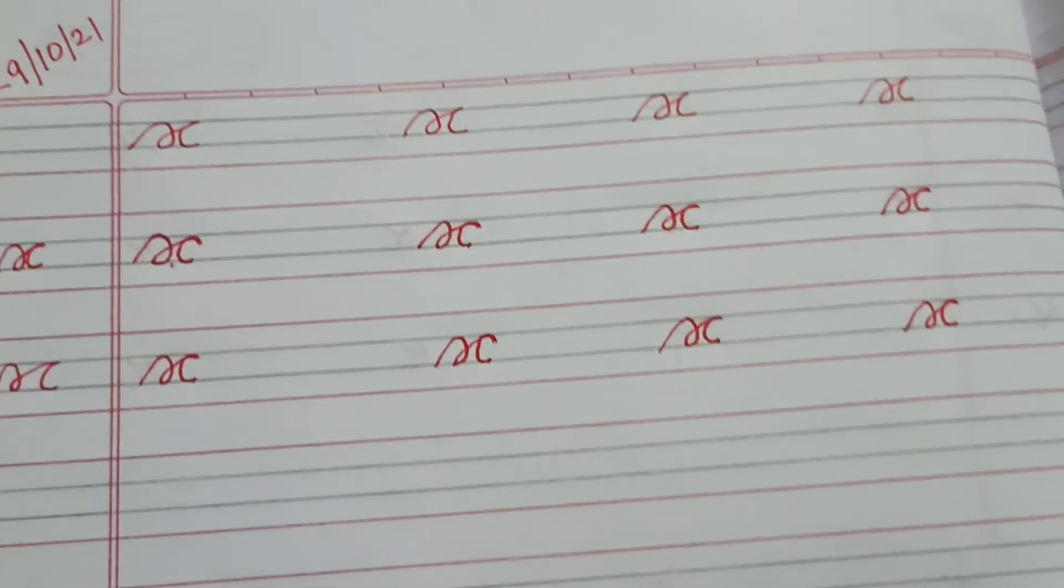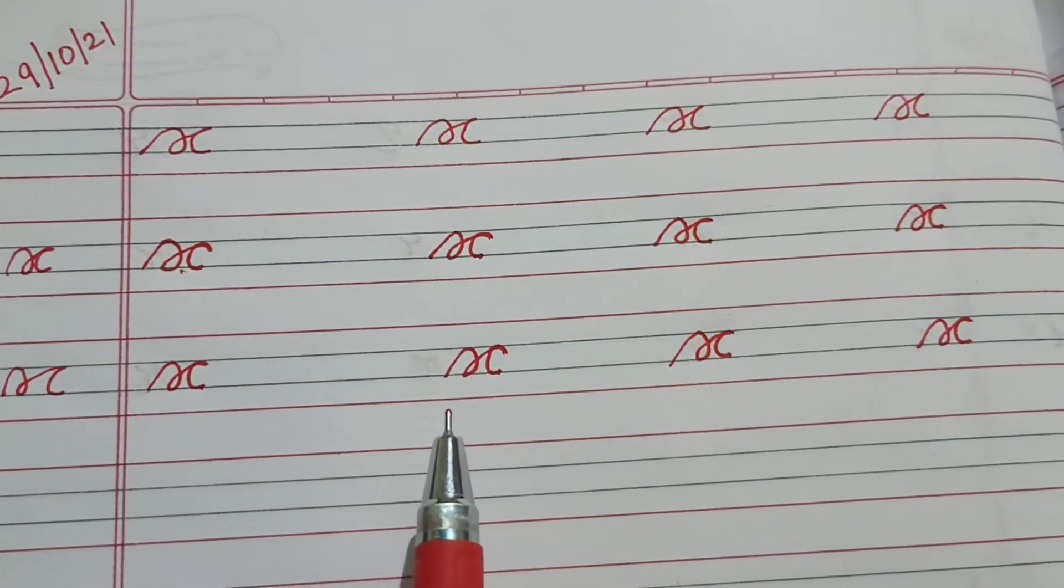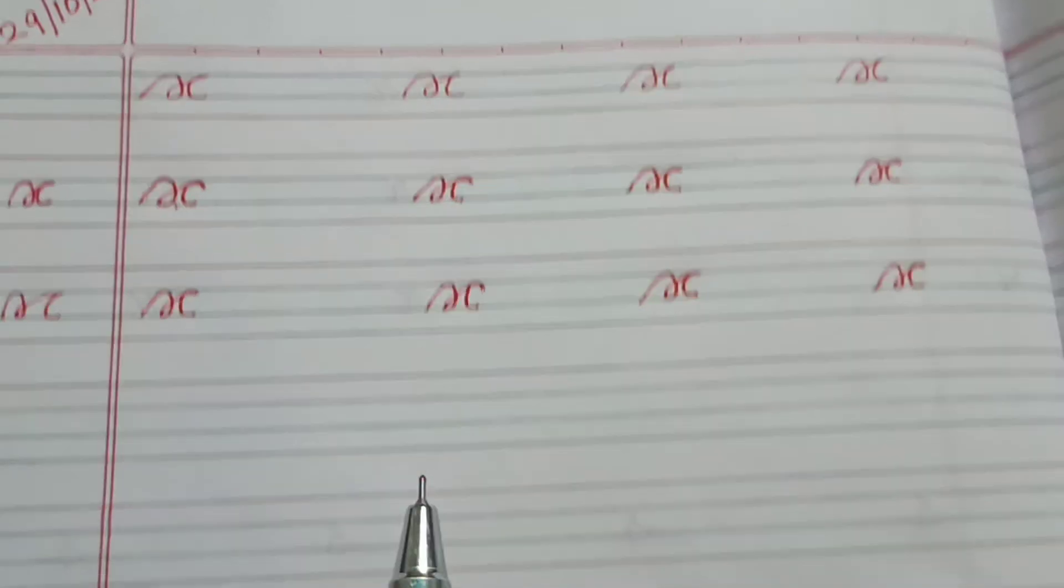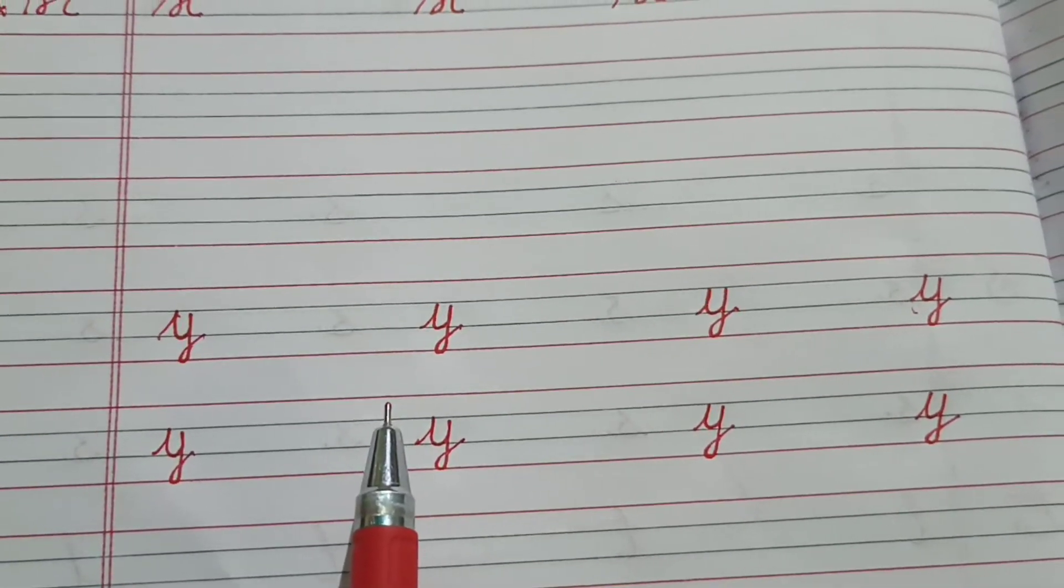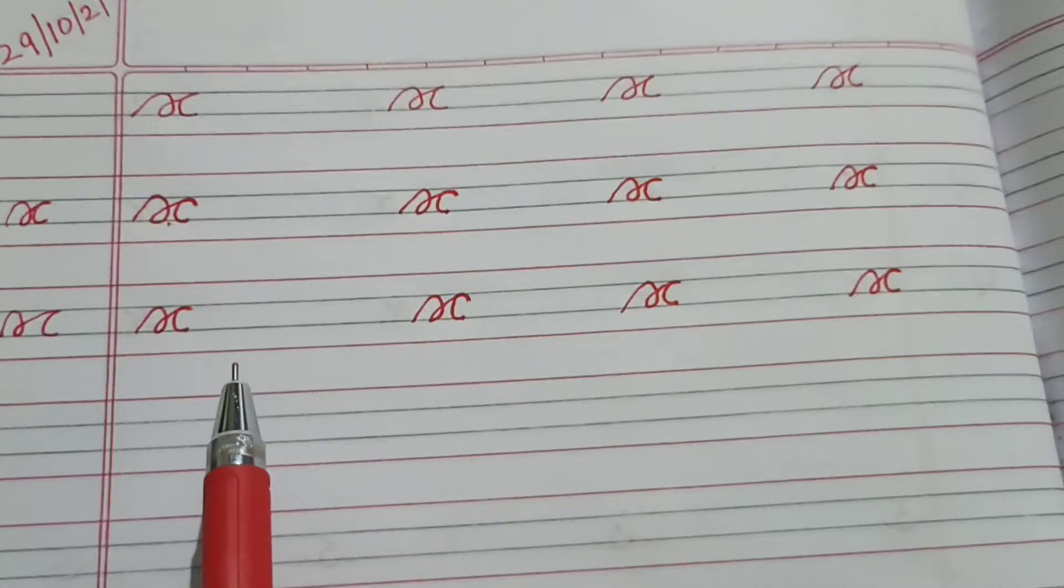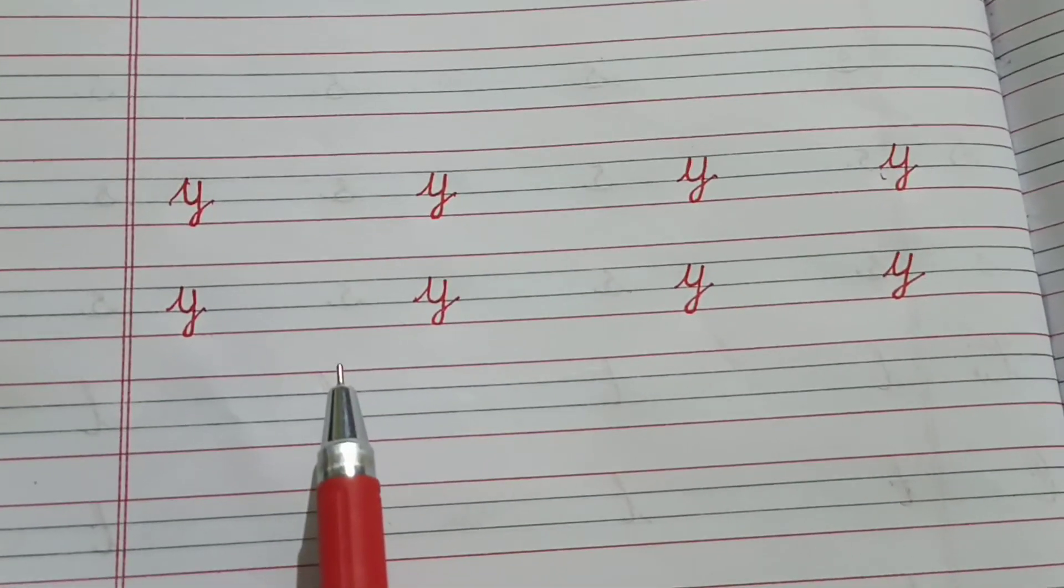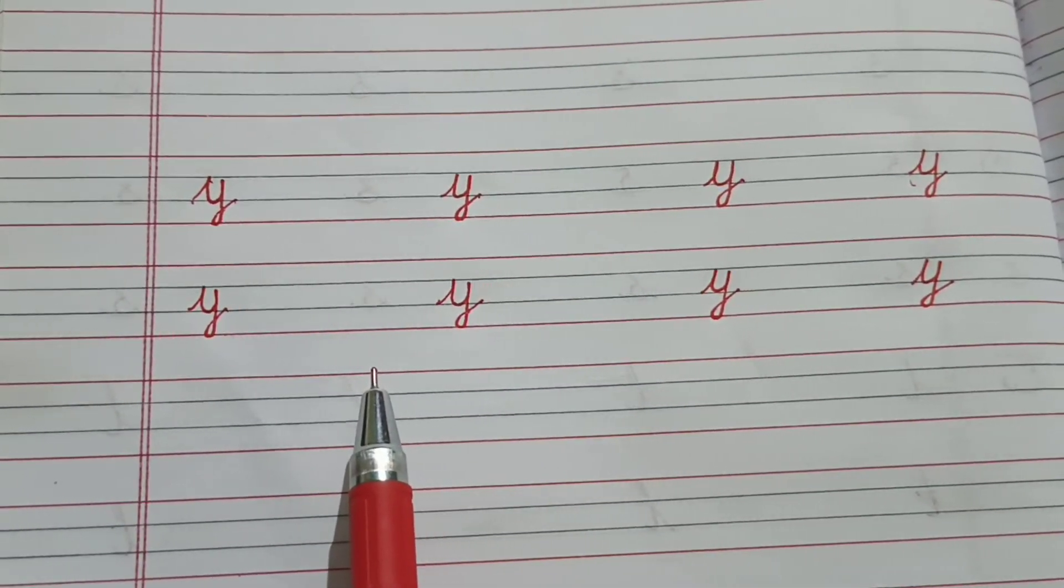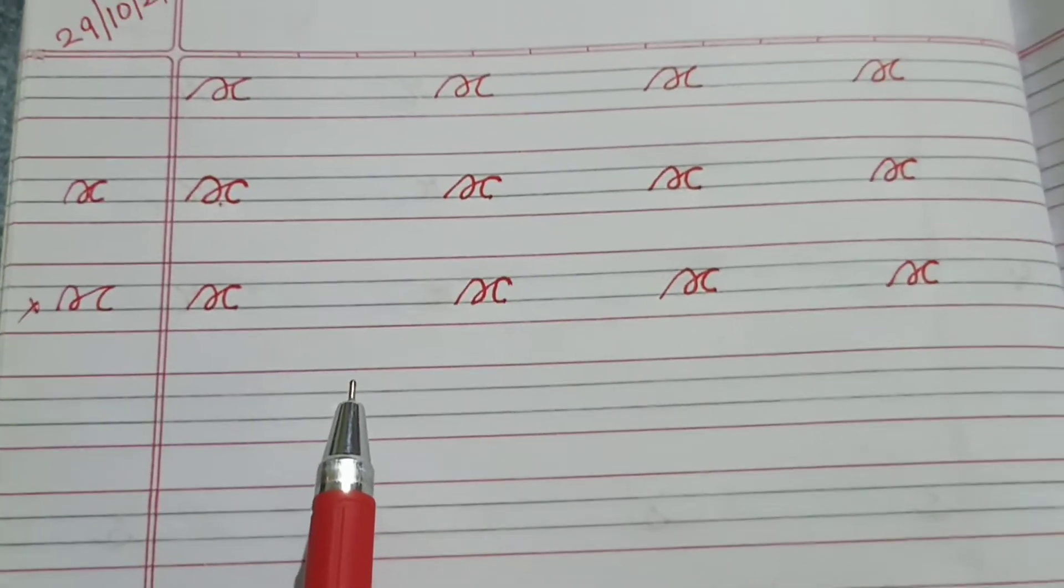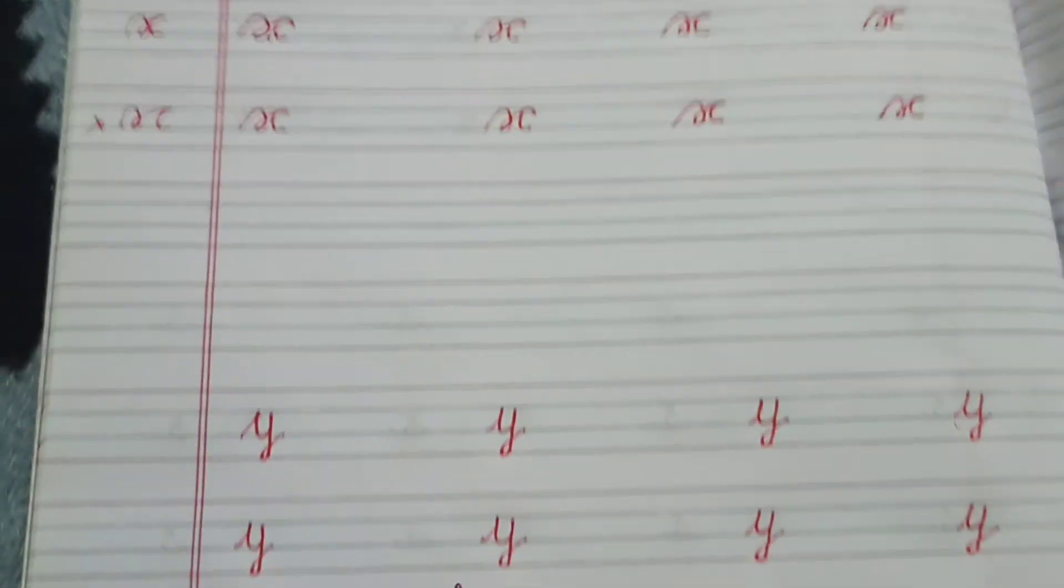Here you can see X, this is small x, and this is Y. You have to write this. One page X, and the next page you have to write Y. So today I am going to give you only two letters, X and Y.